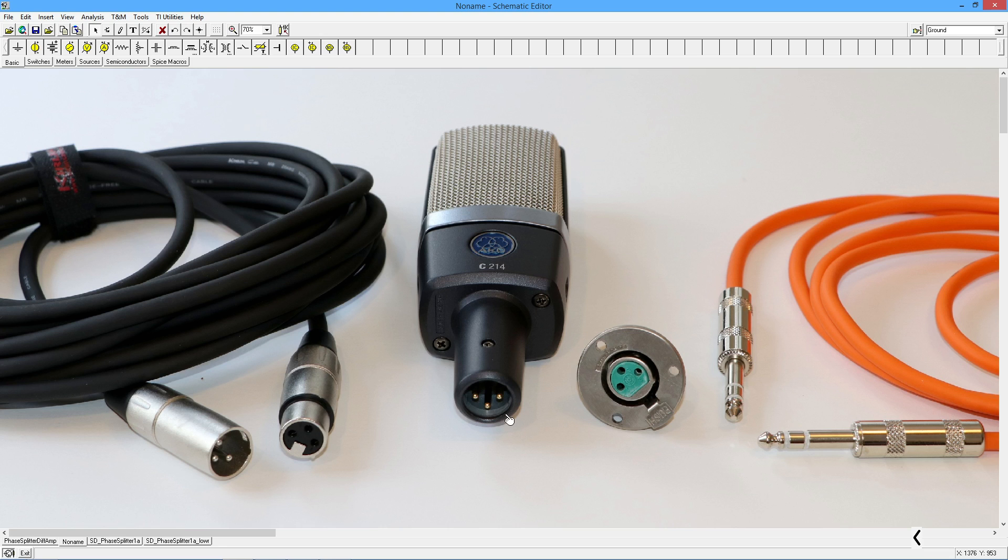So that would be very typical. So you have the three pins, one for ground, and then the other two signal carrying pins, the hot pin and the neutral pin, so to speak. Another thing that you see in Pro Audio nowadays, much more than you used to, is a TRS quarter inch or 6.35 millimeter connector.